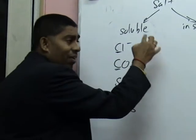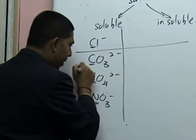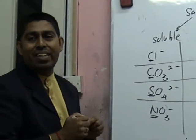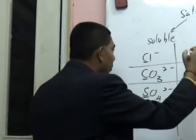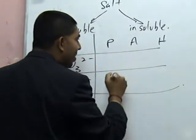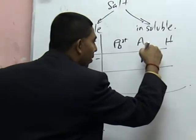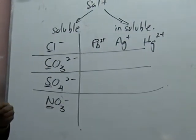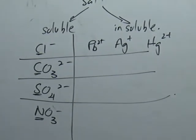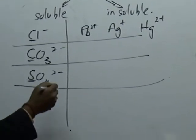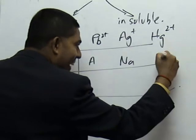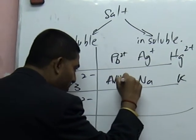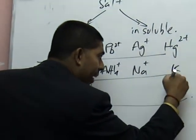What Cindy did was she called her father: Pa. So P-A-H. P here is lead, Pb²⁺. A here is silver, Ag⁺. H here is mercury, Hg²⁺. Once Cindy called her father Pa, the father replied back by saying: Ana. Ana here is A-N-A-K. A is ammonium, NH₄⁺. N is sodium, Na⁺. K is potassium, K⁺.